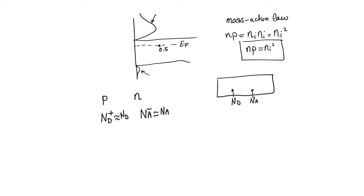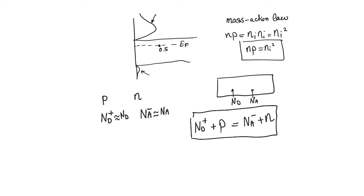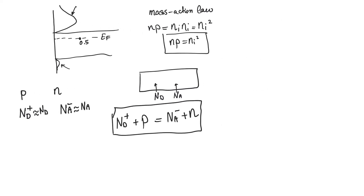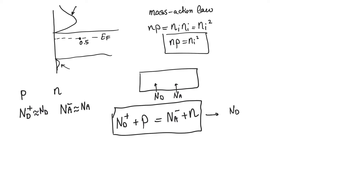The piece of silicon is electrically neutral — the net charge must be zero. It contains ionic charge which is positive, and holes that are also positive, and these have to equal the negative ionic charge from acceptors and the electron concentration. This is the electrical neutrality relationship, and assuming full ionization, we can replace Nd+ with Nd and Na- with Na. Together with the Mass Action Law, this allows us to find the concentration of electrons and holes regardless of the type of doping we use.